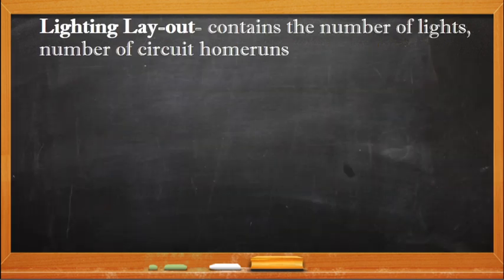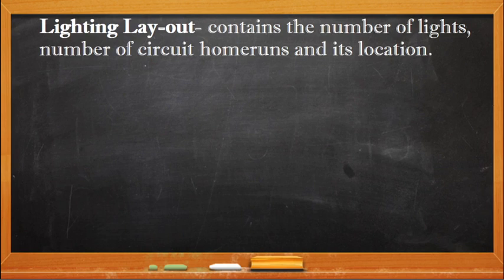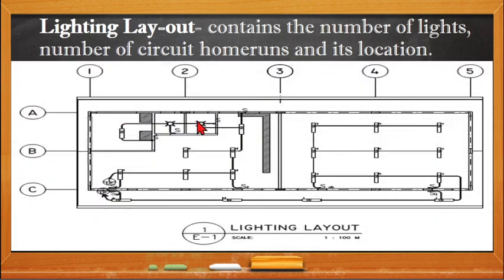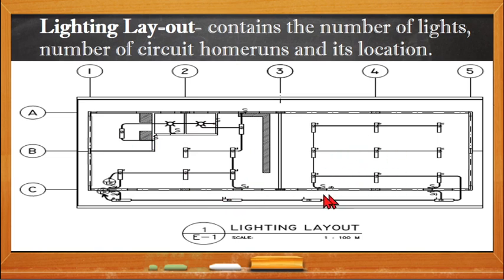The lighting layout contains the number of lights, number of circuit home runs, and their location. Here is an example of a lighting layout. These are the symbols for the lights. The lighting layout will also contain the switch and the location of the switch — the switch will be put on this side of the wall. We have two home runs, so we have two circuits and two circuit breakers.